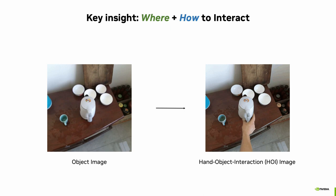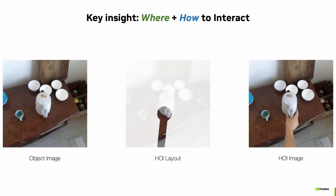To generate realistic and diverse hand-object interaction images, or HOI images, we are inspired by affordance prediction literature. The key insight is to factorize the process into two tractable steps: where and how to grasp. These two steps are connected by an intermediate representation, HOI layout. Both steps are stochastic but focus on different types of stochasticity, and both are implemented as a diffusion model.